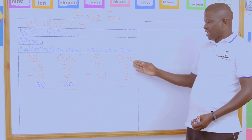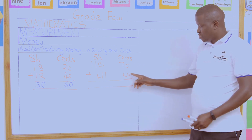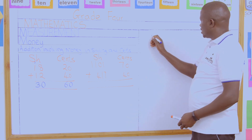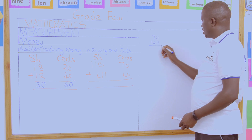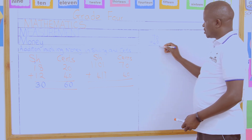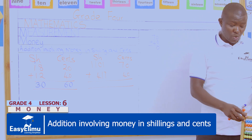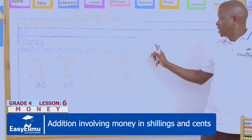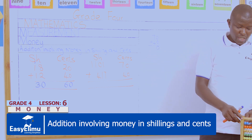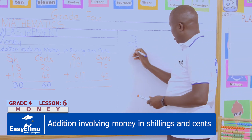Now we are adding 70 cents plus 40 cents. When you add: 0 plus 0 is 0, and 7 plus 4 — when you pick your abacus and try to add in the place value of ones: we have 7, we are adding 4, that gives us 11. So we will have 11 here.